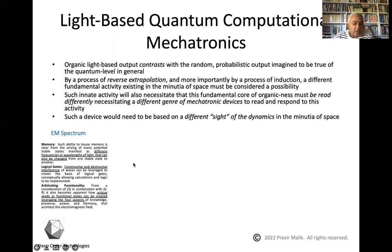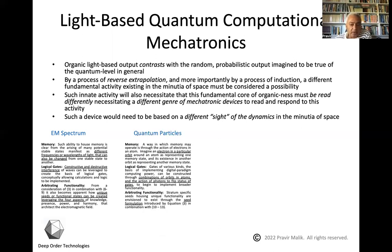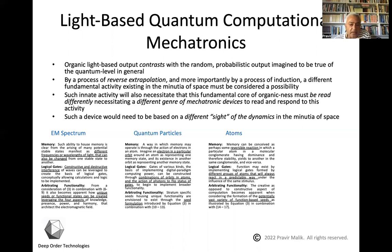Logical gates can be seen as created by constructive and destructive interference of waves. The large amount of functionality can be seen from the third layer of the light matrix, in which there are many different seed forms that are possible. At the quantum particle level, we may think about the electron in a particular orbit around an atom as being made to represent memory. Logical gates can be a function of a combination of orbits and the action of photons to flip the status of these orbits. And the functionality derives from the third layer in light, which creates many unique seeds at the quantum particle level.